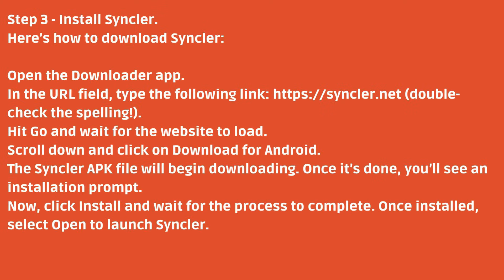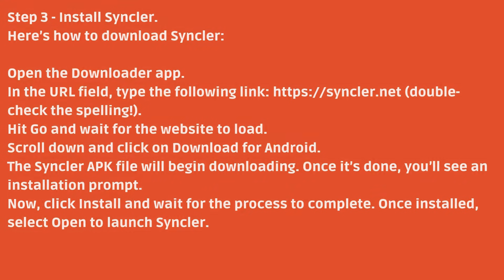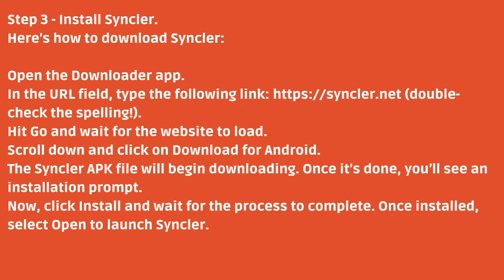Step 3: Install Sinclair. Open the Downloader app. In the URL field, type the following link: sinclair.net. Double check the spelling. Hit Go and wait for the website to load. Scroll down and click on Download for Android. The Sinclair APK file will begin downloading. Once it's done, you'll see an installation prompt. Click Install and wait for the process to complete. Once installed, select Open to launch Sinclair.